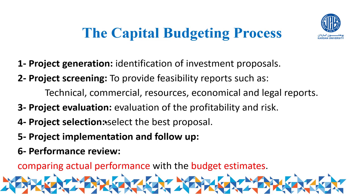For capital budgeting, there is a process to follow before selecting any investment or project. Step one is project generation — the identification of investment proposals. You identify which investments to pursue, collecting data and ideas, for example whether to start a restaurant, a club, a swimming pool, or a university.